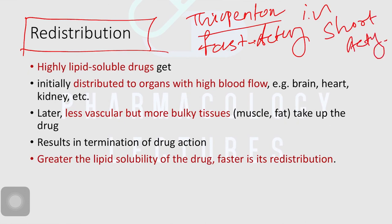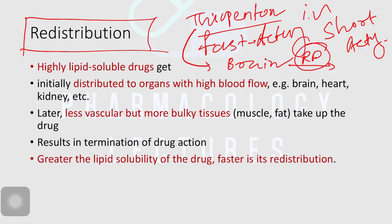So why is it short acting? There is a reason for that. Once you give thiopentone, it initially goes through the blood into the brain. The brain is a highly perfused tissue where perfusion is very high. So the drug goes into this highly perfused tissue — the brain — acts there, and then it quickly gets redistributed.